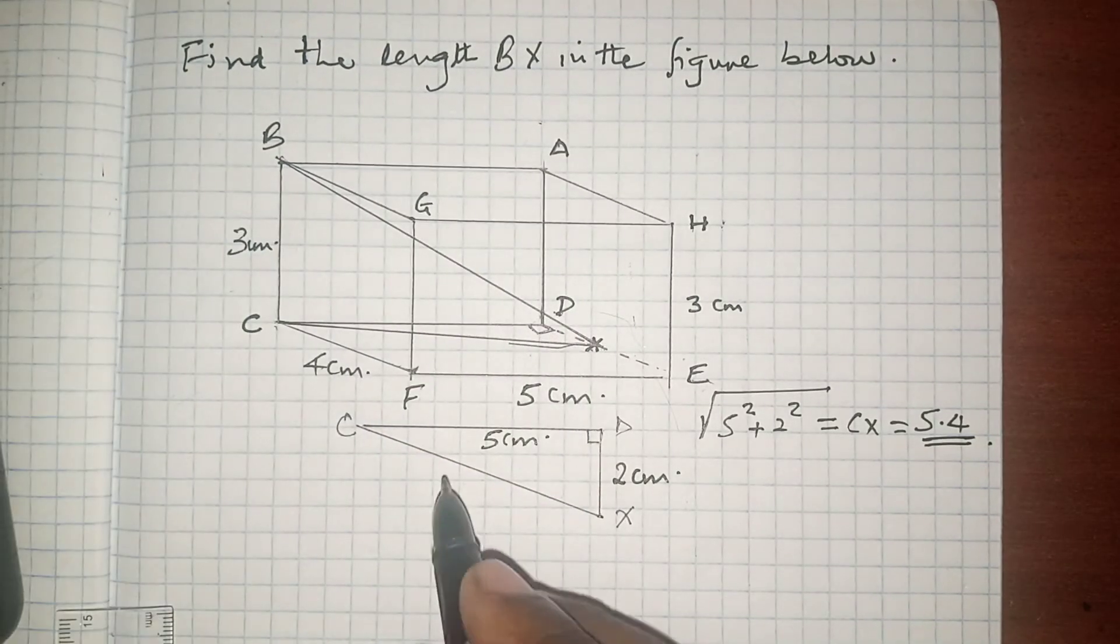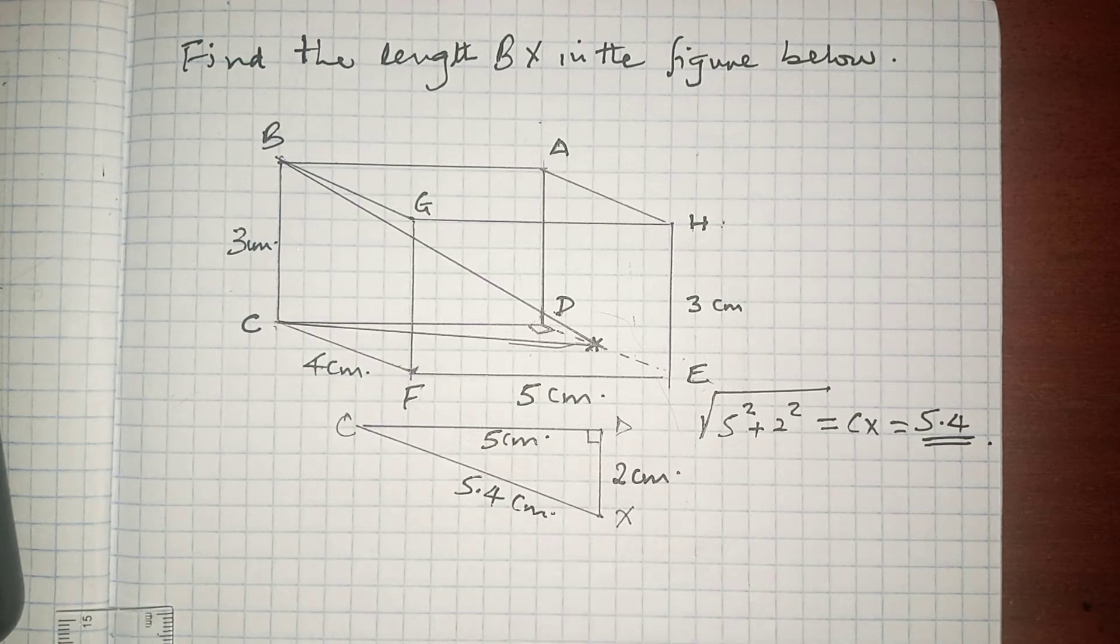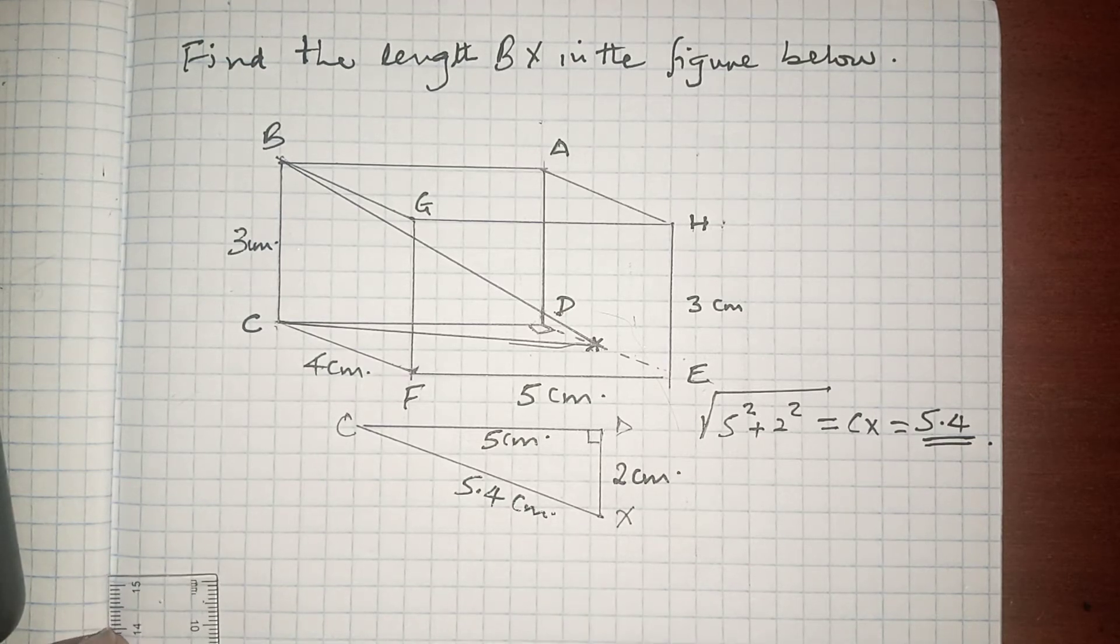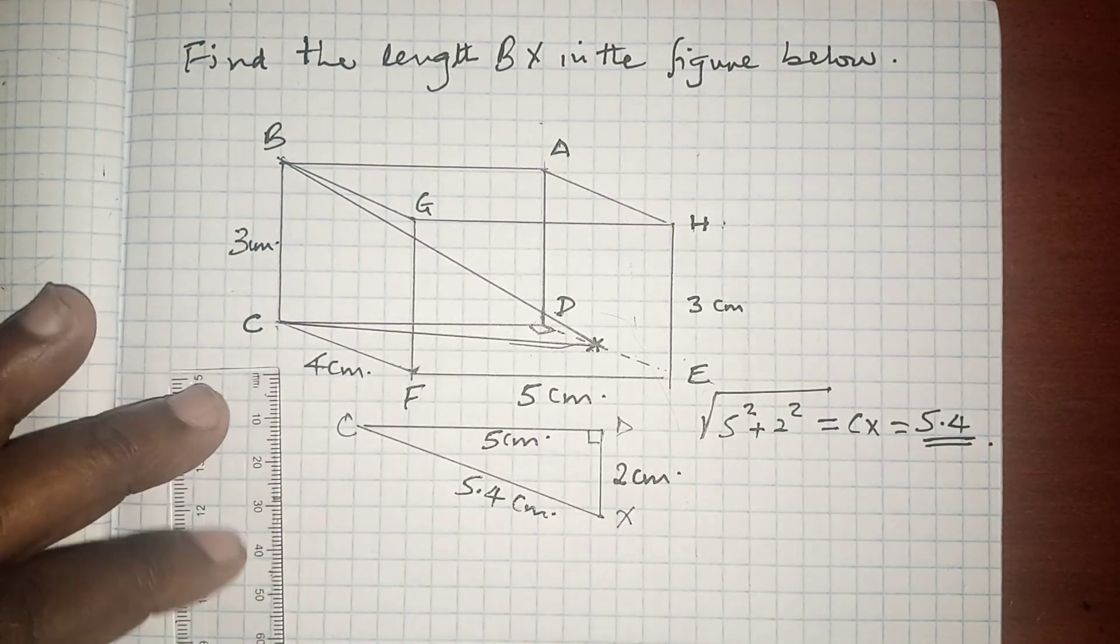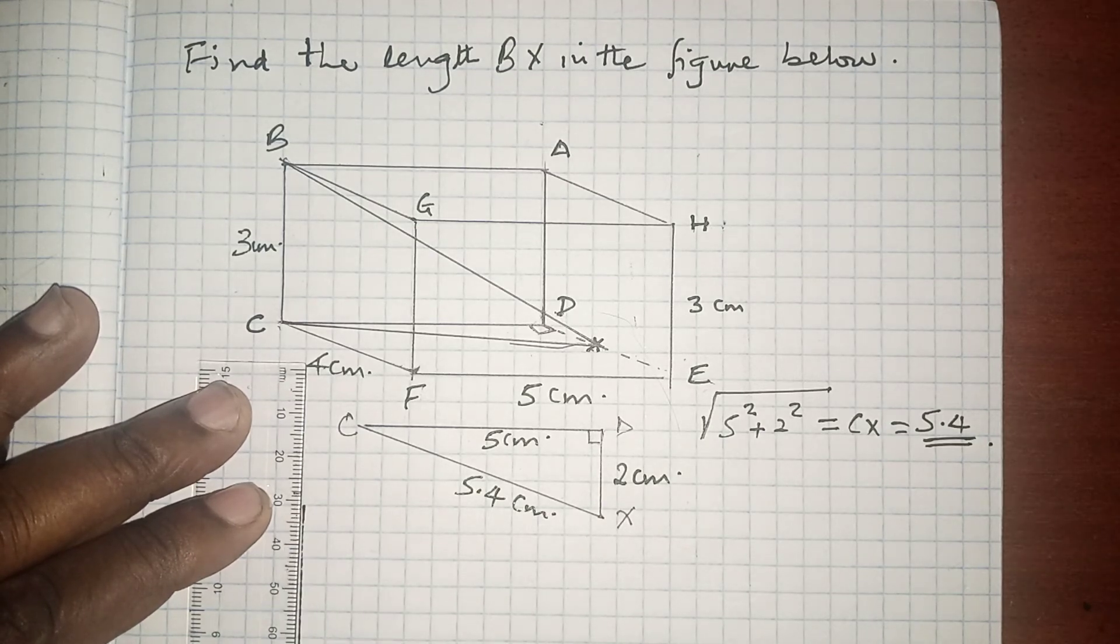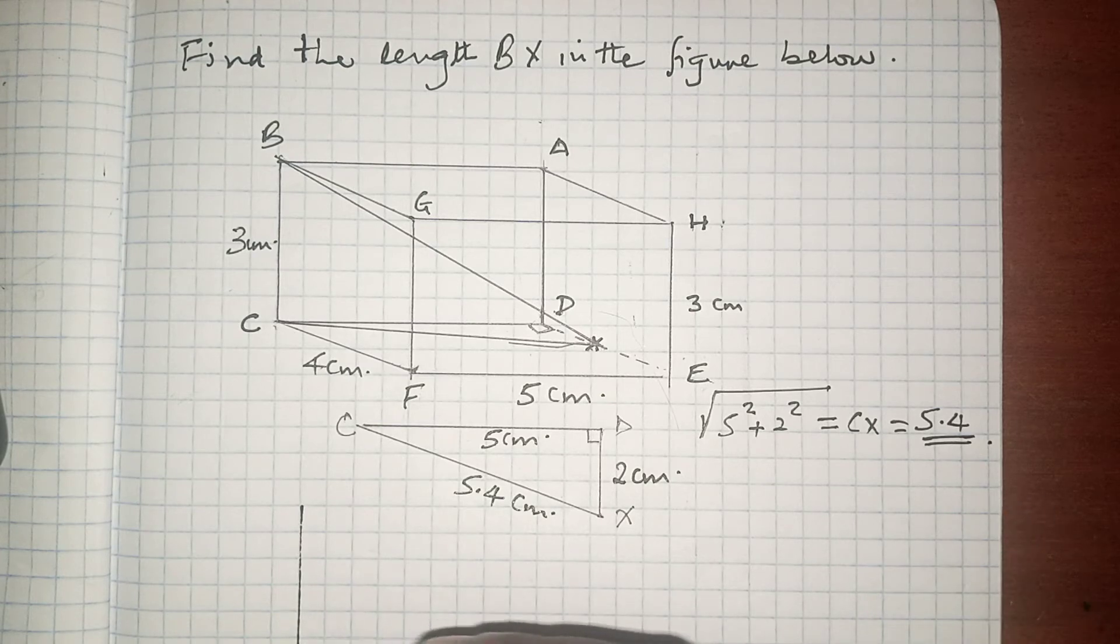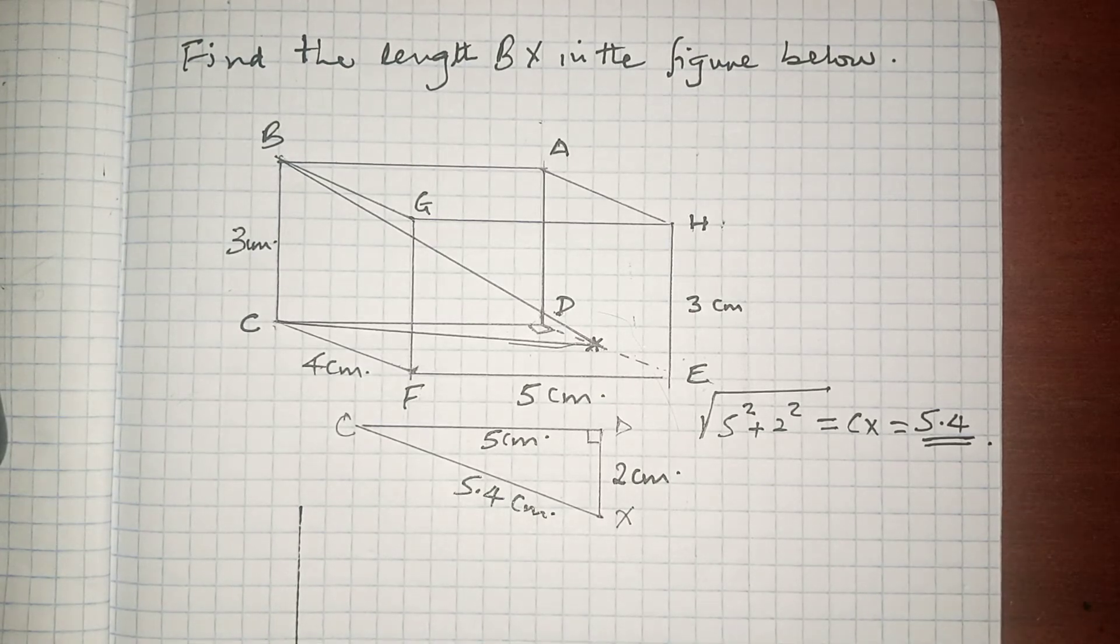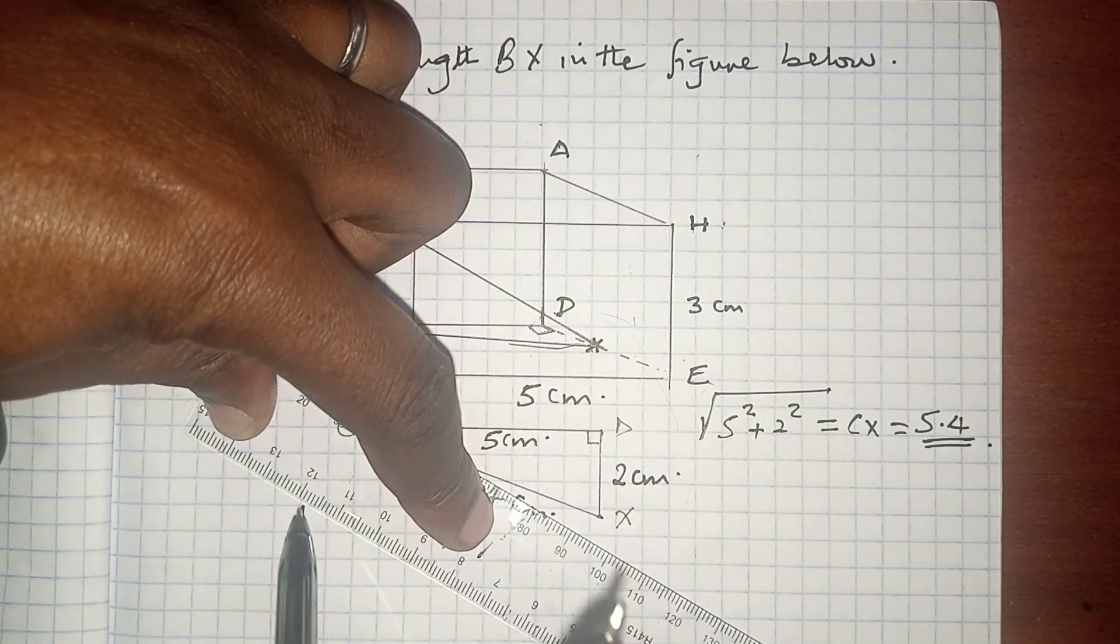If this is 5.4 cm, then we are going to extract another triangle, which is triangle BCX, and bring it on board here.